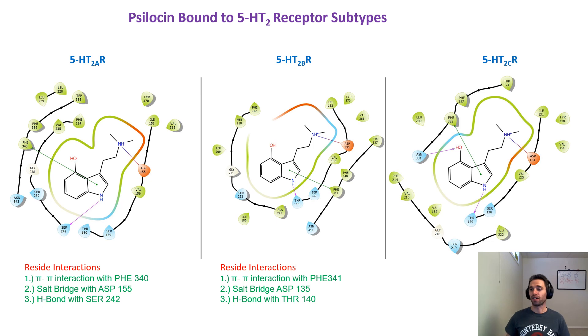And lastly, we have psilocin bound to the serotonin 2C receptor, and we've got some interactions. We've got the pi-pi interaction with phenylalanine 228 in this case. We've got the salt bridge with aspartic acid 134, and we also have a hydrogen bond with threonine 139 in this case.